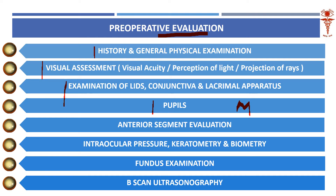Next is a thorough anterior segment evaluation. You have to judge the anterior chamber depth, the nature of the cataract — whether immature or mature — whether there is any subluxation, whether zonular fibers have given way, whether there is any synechia, and whether the pupil is adequately dilating. All these features are very important. Next, you have to check the intraocular pressure, which is a very important parameter. Similarly, you need to do keratometry and biometry — a K reading and an A scan.